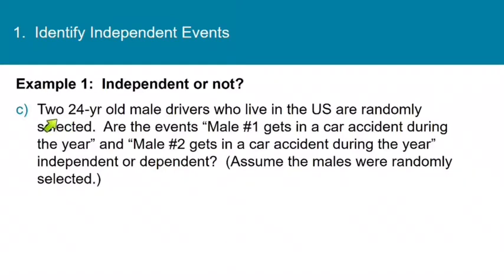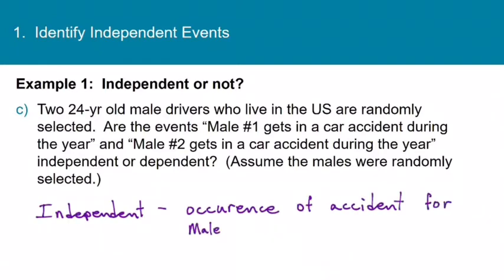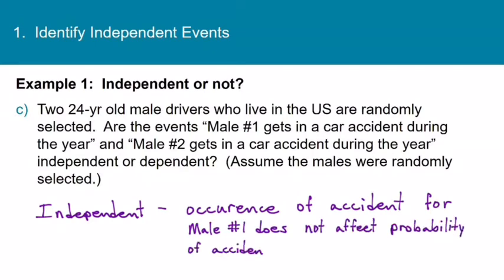In part C, two 24-year-old male drivers in the U.S. are randomly selected. Are the events 'male number one gets in a car accident during the year' and 'male number two gets in a car accident during the year' independent or dependent? Assume the males were randomly selected — they're not neighbors or friends and won't get into an accident with each other. For instance, consider a male in Tennessee and a male in Nevada. The occurrence of male number one having a car accident could not possibly affect the probability of male number two having a car accident. So these two events are independent.